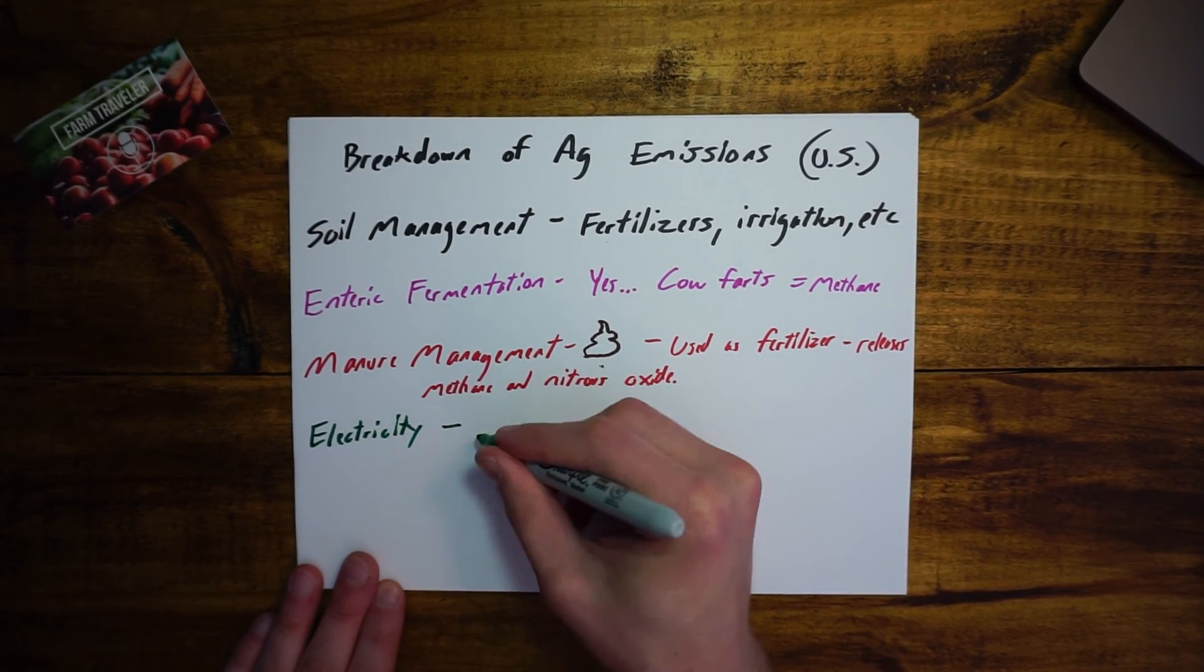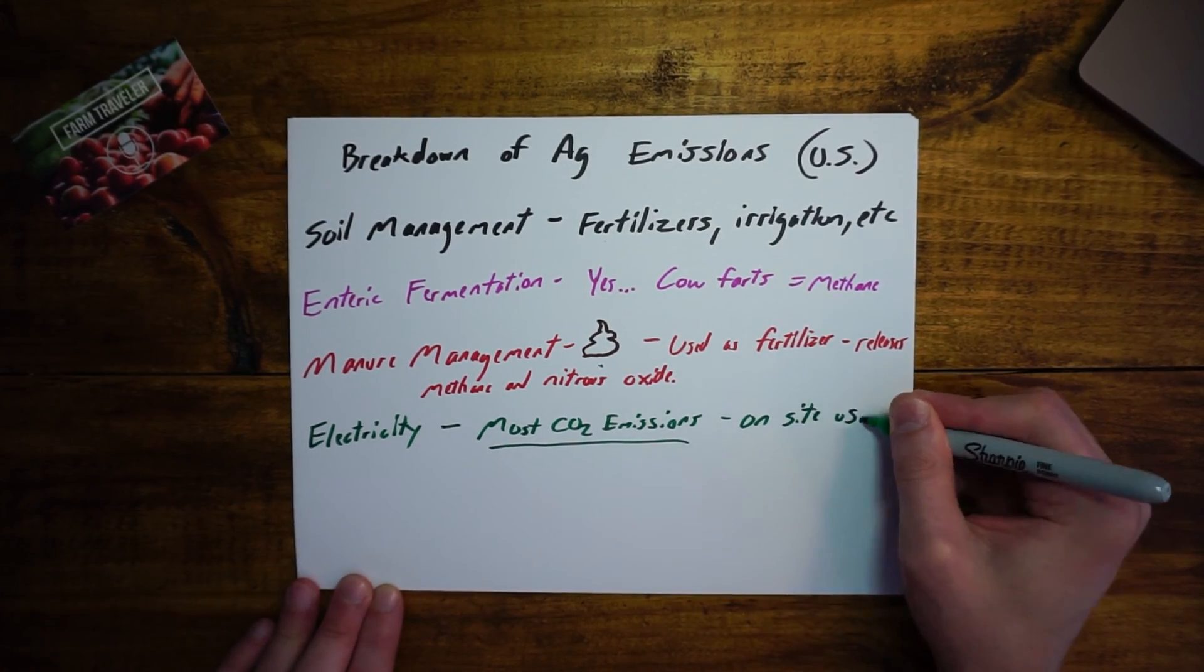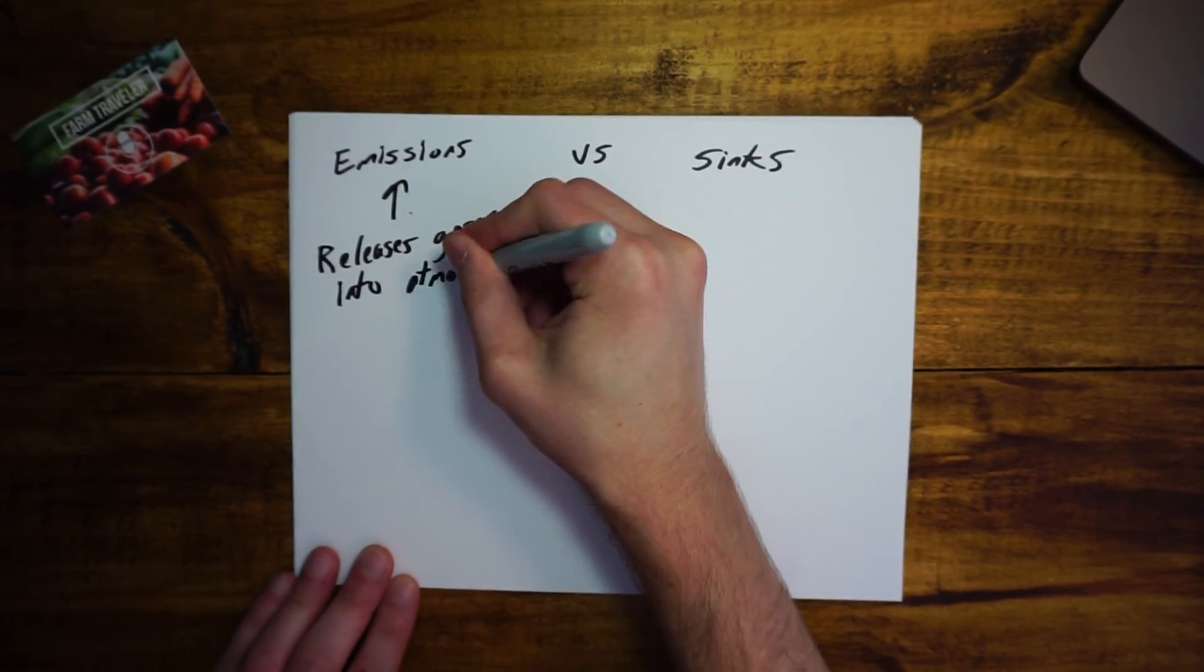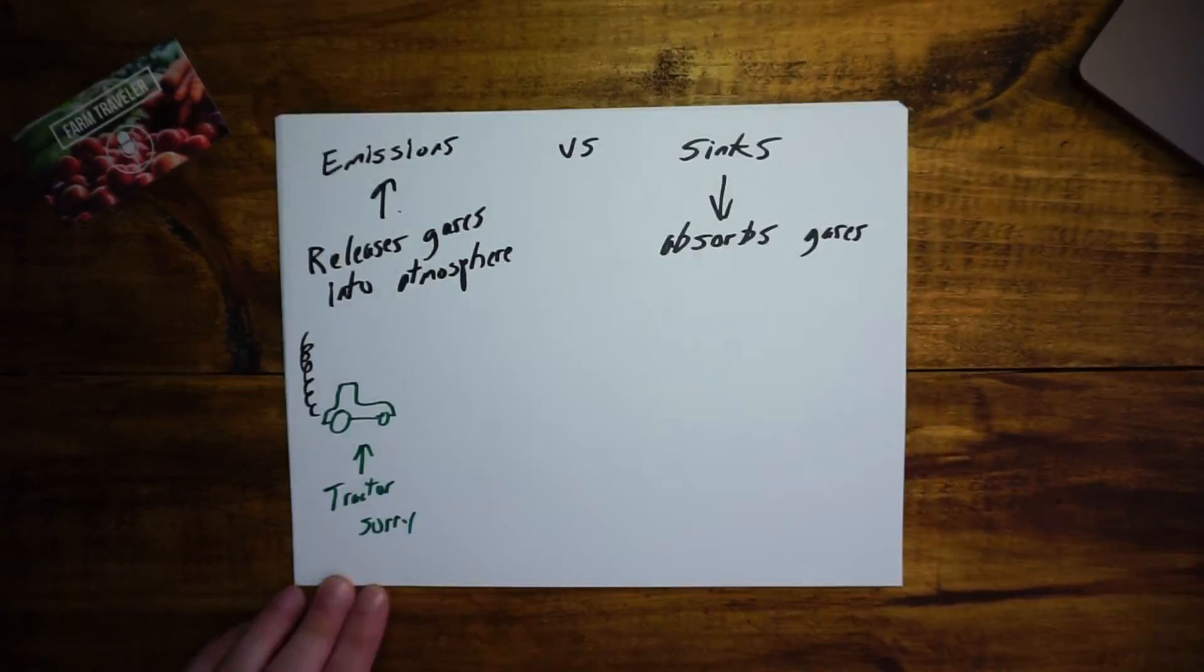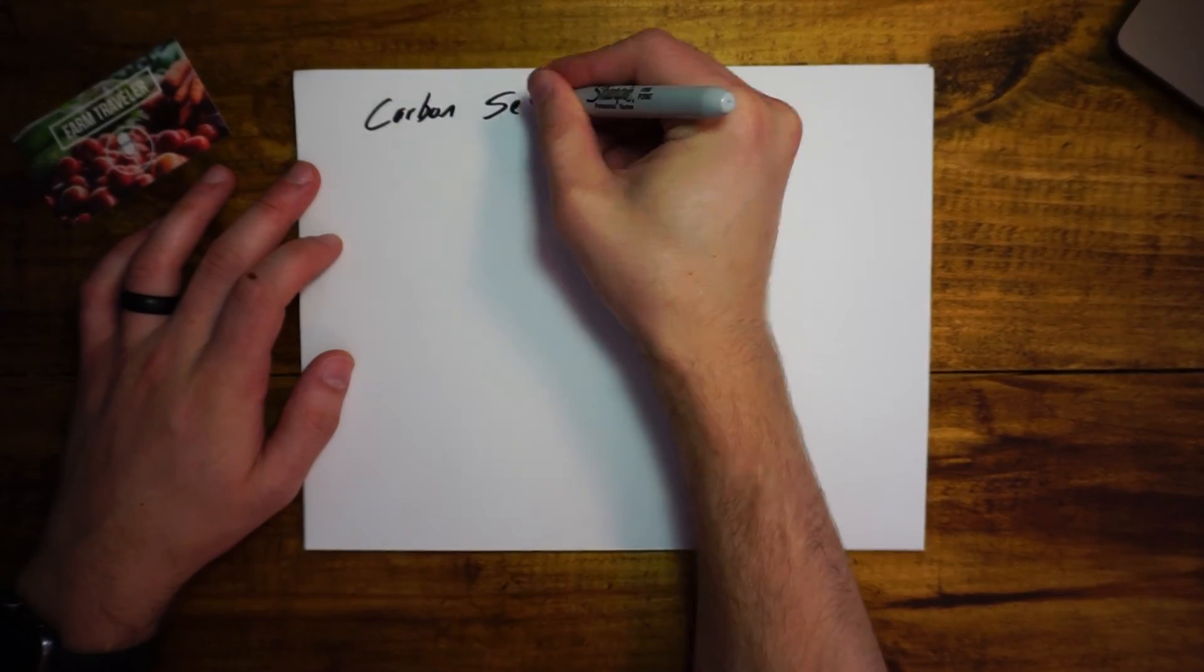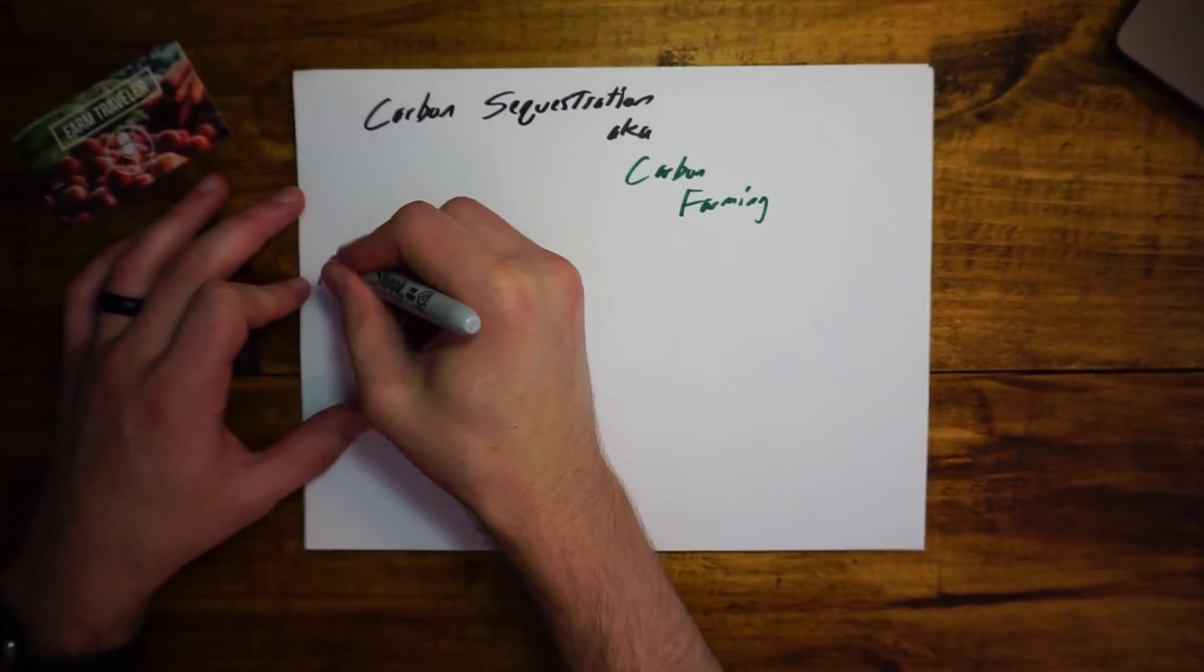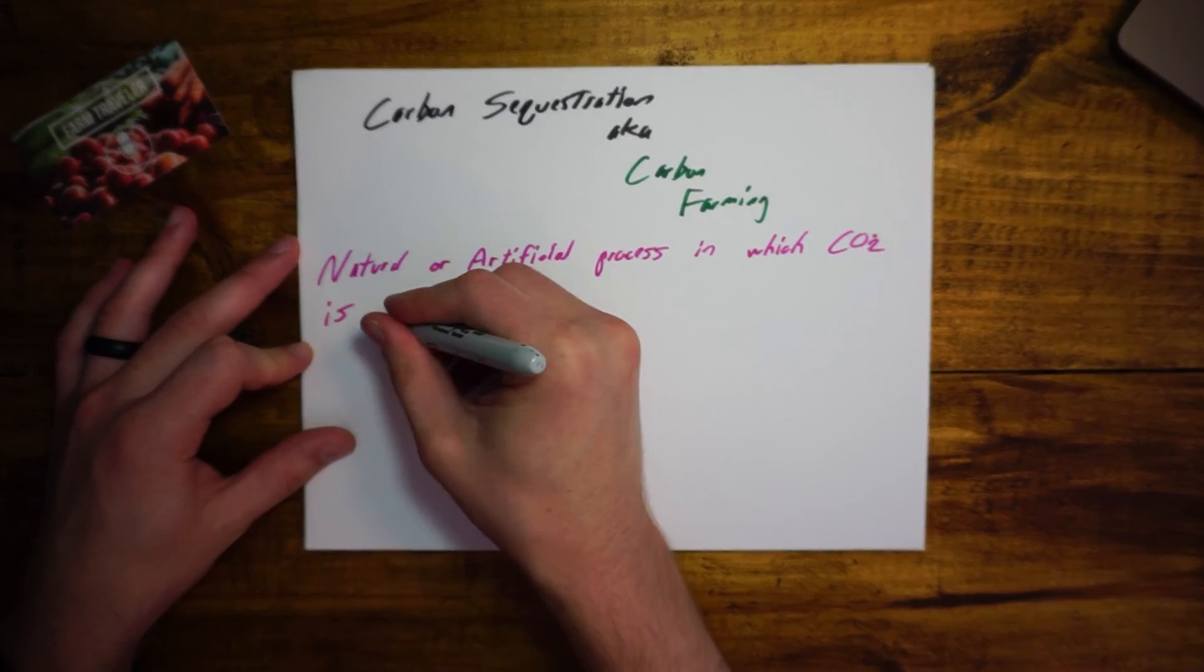Electricity is another source. Most CO2 emissions in agriculture are related to electricity use on site. Now agriculture is a unique industry as it can both generate and capture carbon, and capturing carbon would be one of the answers in reducing the industry's impact on the environment. So again, what is carbon sequestration? Again, the definition is a natural or artificial process by which carbon dioxide is removed from the atmosphere and held in a solid or liquid form.